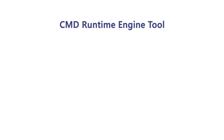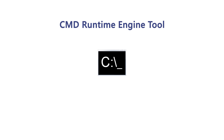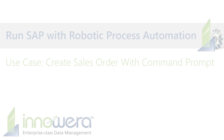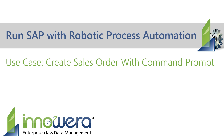Innawera's Process Runner Command Prompt Tool, a part of Innawera's Robotic Process Automation Suite, is designed to be a lightweight runtime engine to automate the upload and download of SAP data. In this video, we will upload data from a multi-line sales order to SAP using Process Runner Command Prompt Tool and demonstrate how to implement RPA with it.